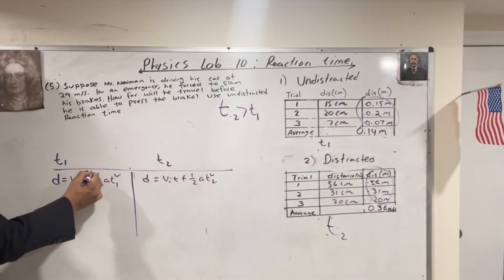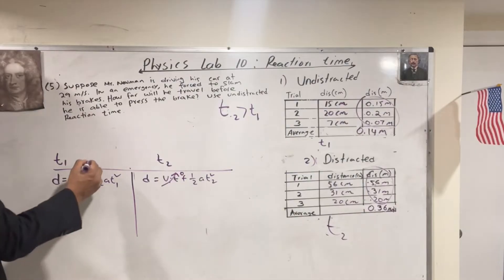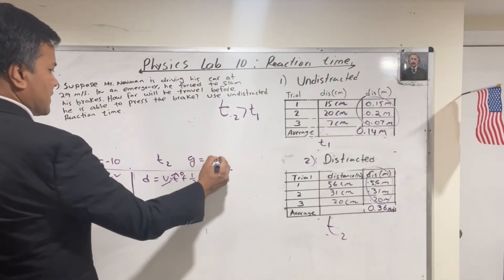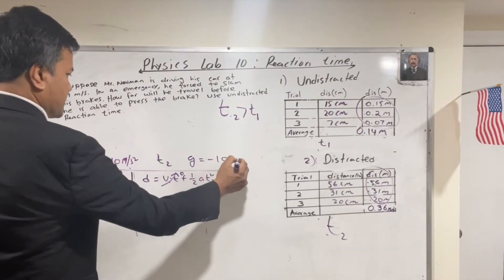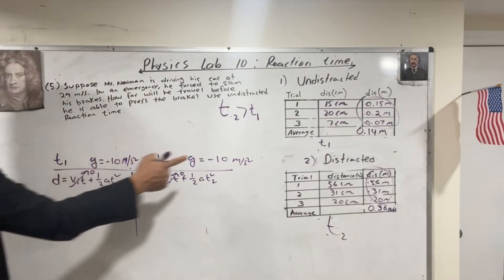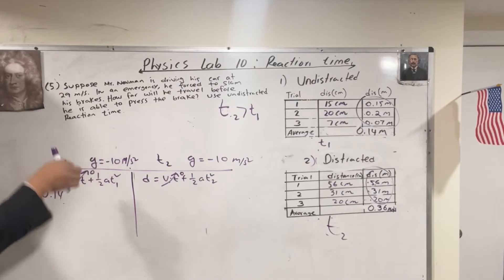Of course, initial velocity is 0. When you drop something, initial velocity is 0. And acceleration due to gravity, we're going to use negative 10 so that we don't have to use the calculator. Don't forget the unit. Unit is important. D, for this one, we're going to use 0.14. Don't forget to use negative 14 because it is falling.